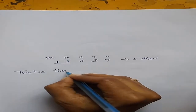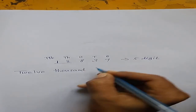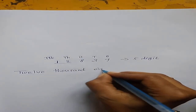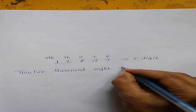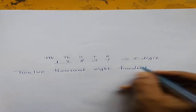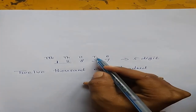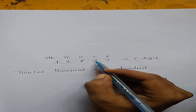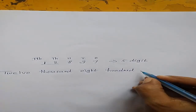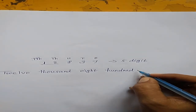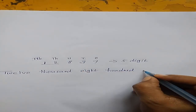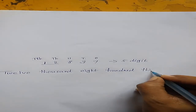So 12,800 — write eight hundred. How many tens here? 3. T means 30, so 3 tens equals 30. So write thirty-seven.